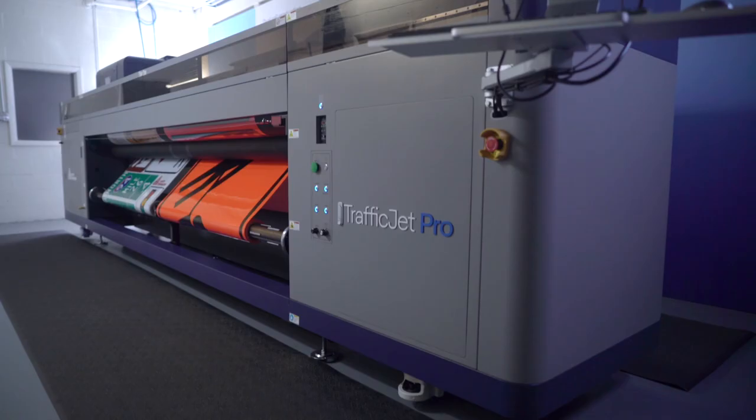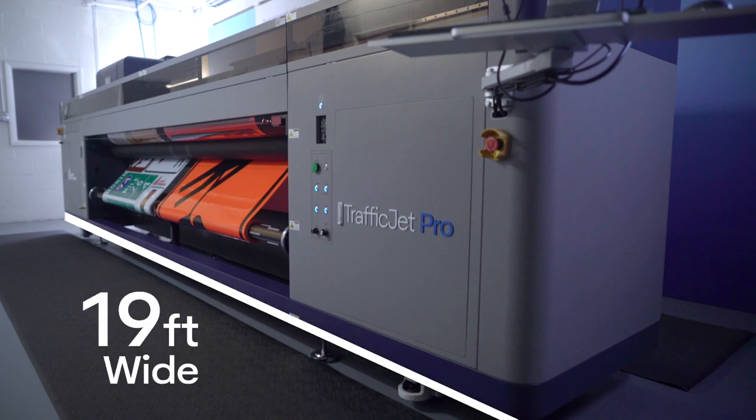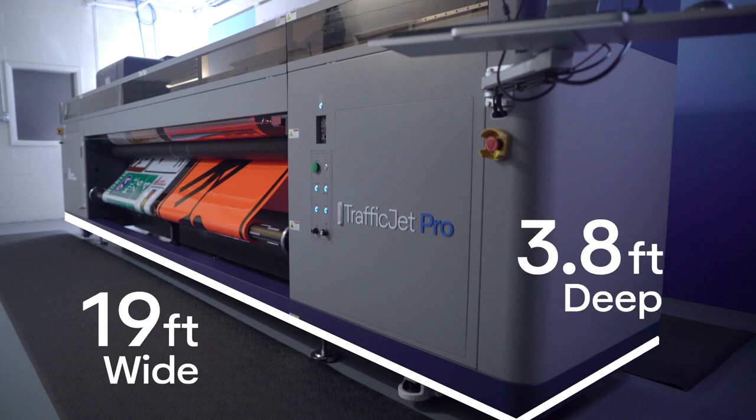TrafficJet Pro has one of the smallest footprints in the industry despite the fact that it prints two rolls side by side. The printer is 19 feet wide and pretty shallow at just 3.8 feet deep.